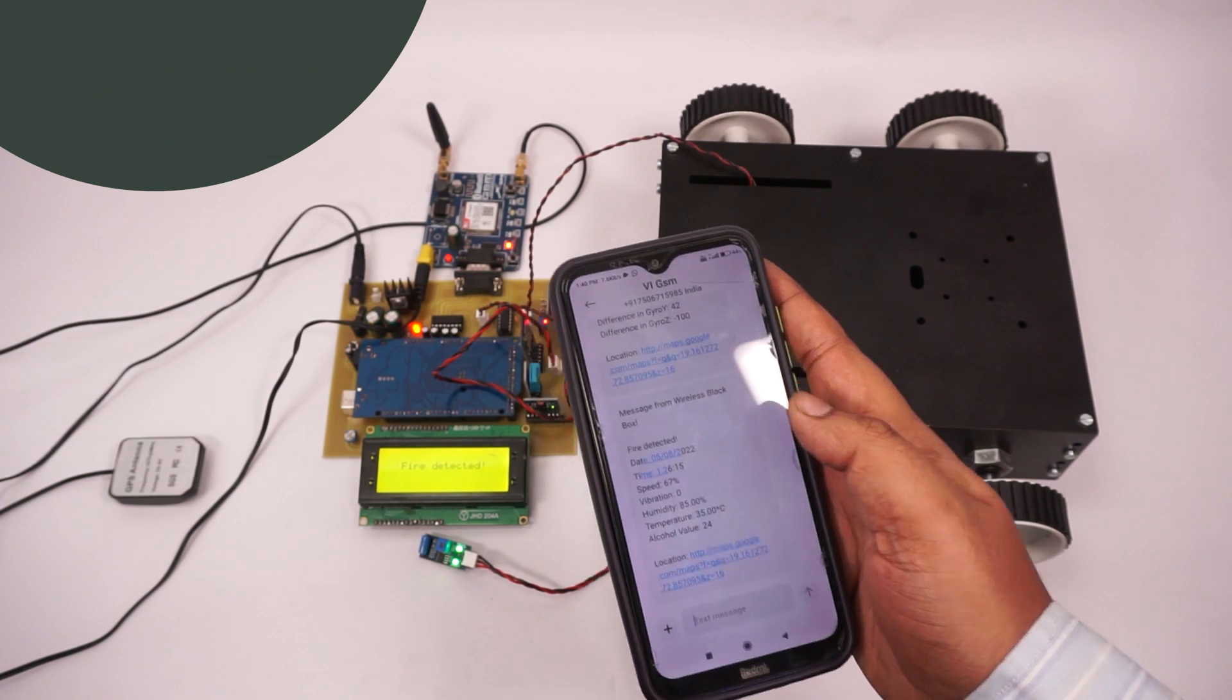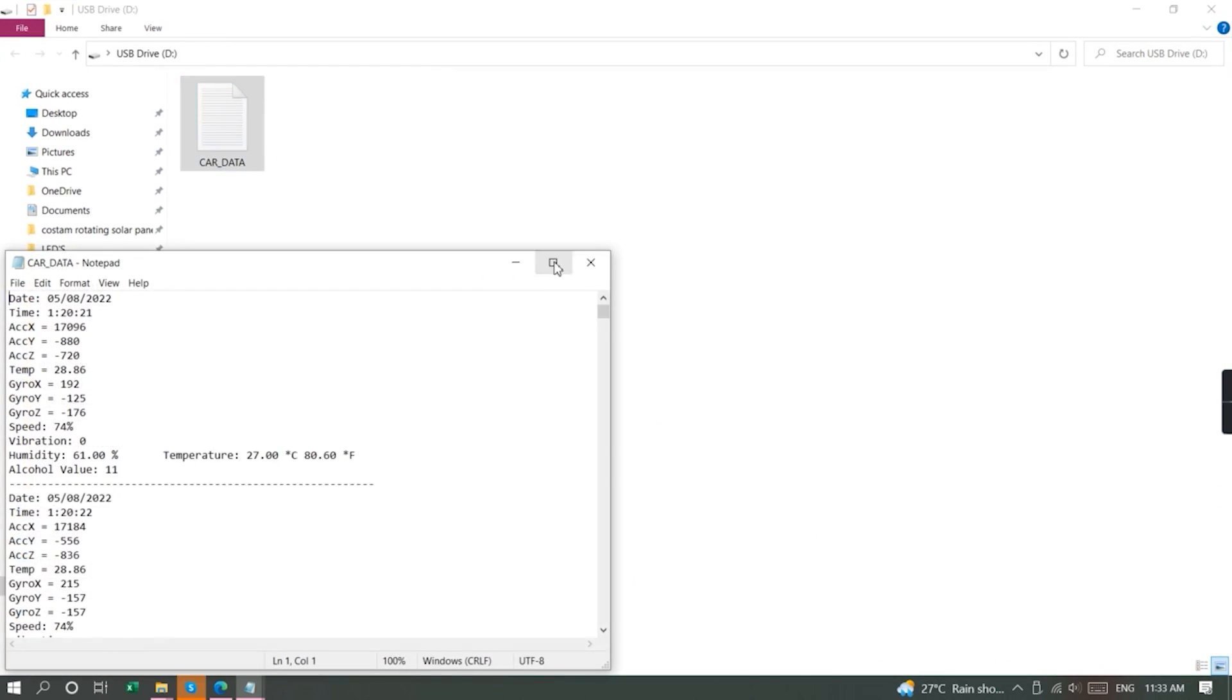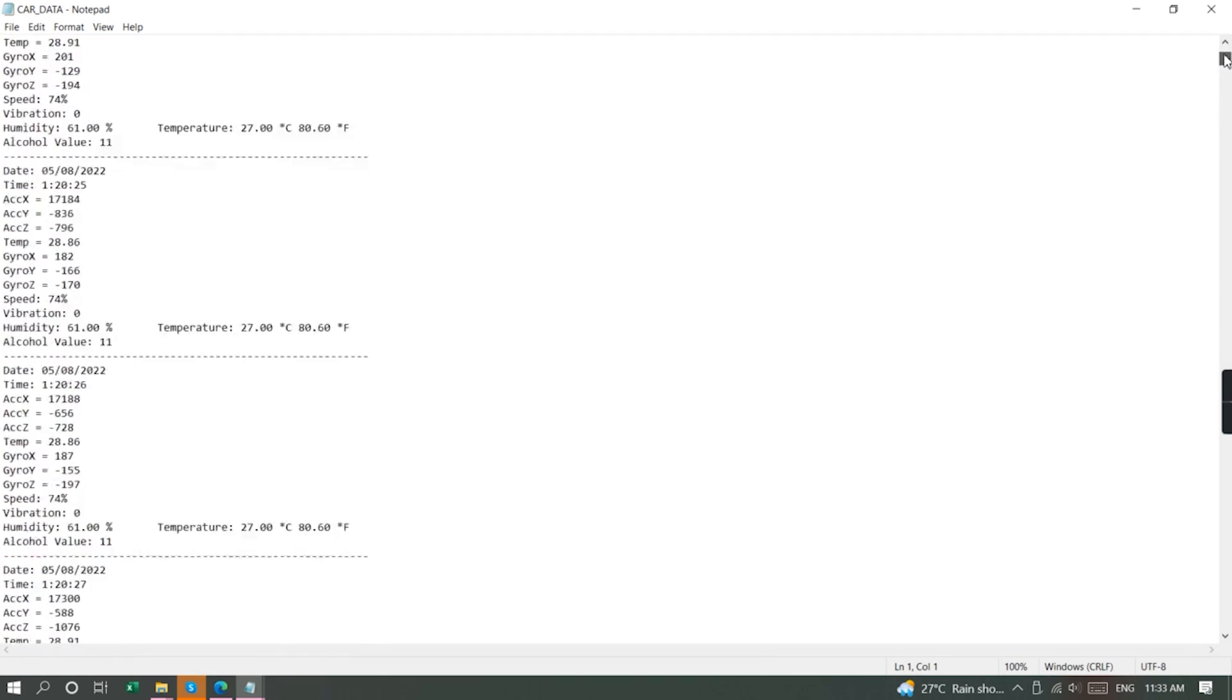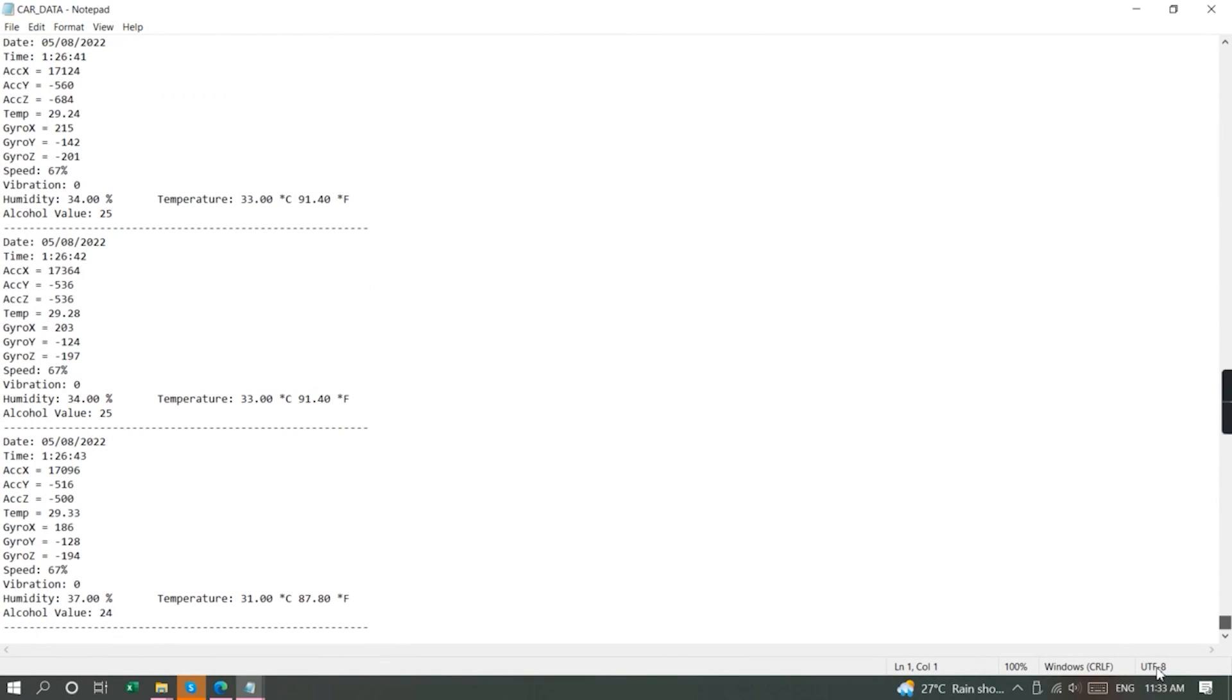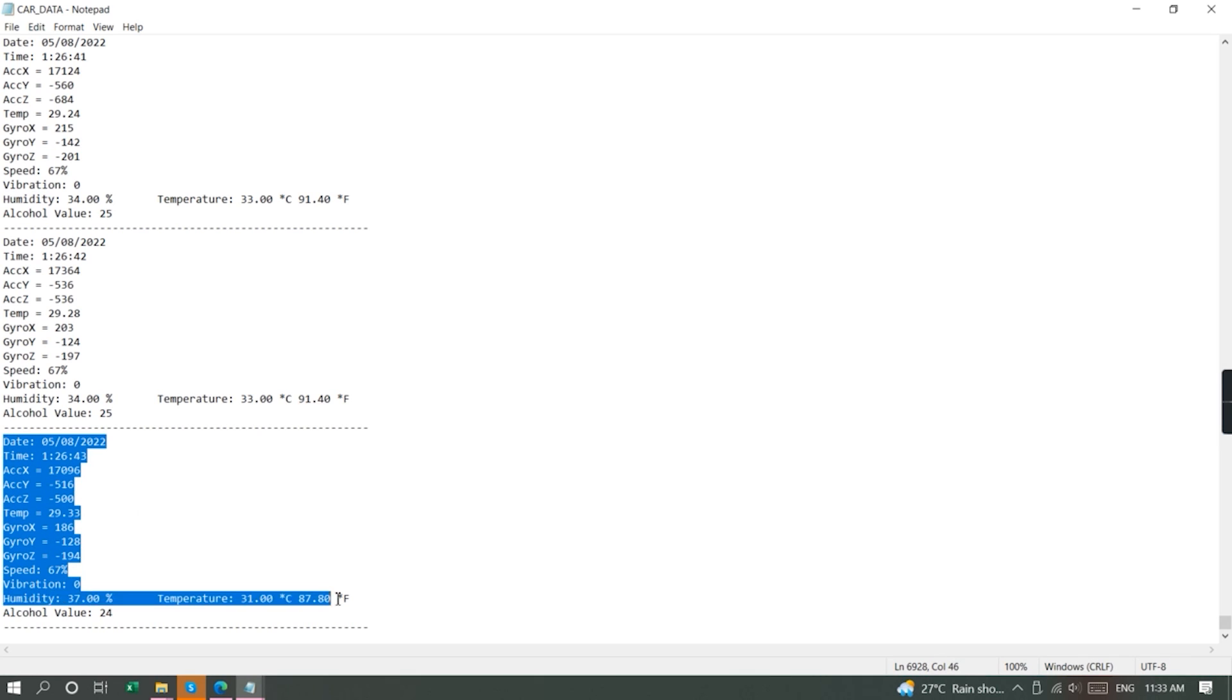So these are the alerts and all this data, whenever an accident happens, all this data is stored on a second by second value format. So on each second, what were the sensor values of the temperature sensor, the vibration sensor, speed, and also the gyro, which is the car turned over or what happened exactly at that particular moment.